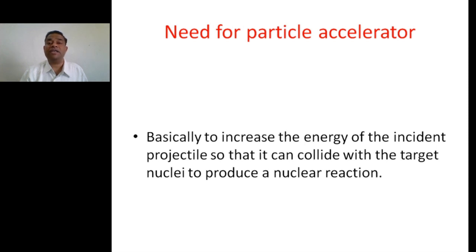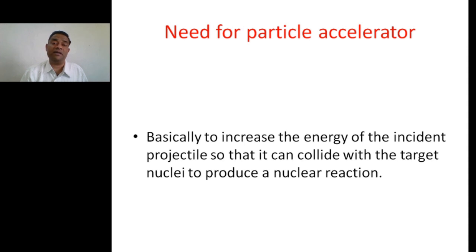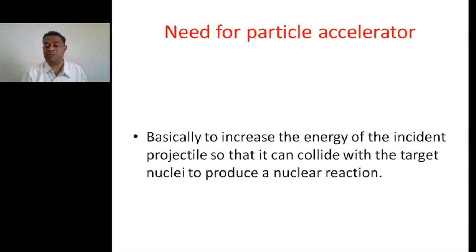According to the simple laws of electrostatics, there should be repulsion between these two — the proton should never be able to reach the nucleus of uranium-235. But in order to carry out the nuclear reaction, there must be a collision. The solution is to increase the energy of the proton so it overcomes the repulsive force and collides with the uranium-235 atom. To do this, we require a particle accelerator, which is used to increase the energy of the incident projectile so that it can collide with the target nuclei and the desired nuclear reaction takes place.